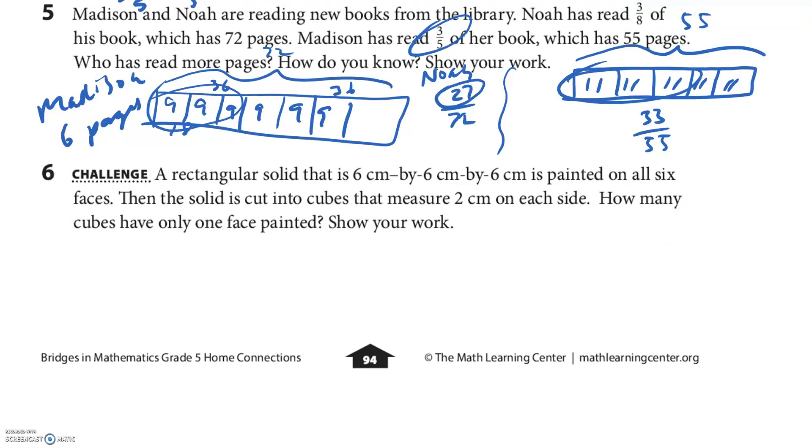Okay, the challenge. A rectangular solid that is six centimeters by six centimeters by six centimeters is painted on all six faces. Then the solid is cut into cubes that measure two centimeters on each side. How many cubes have only one face painted? These cubes are in a two-centimeter cube, so I can fit two here. So there's three. Then two here. That's nine.